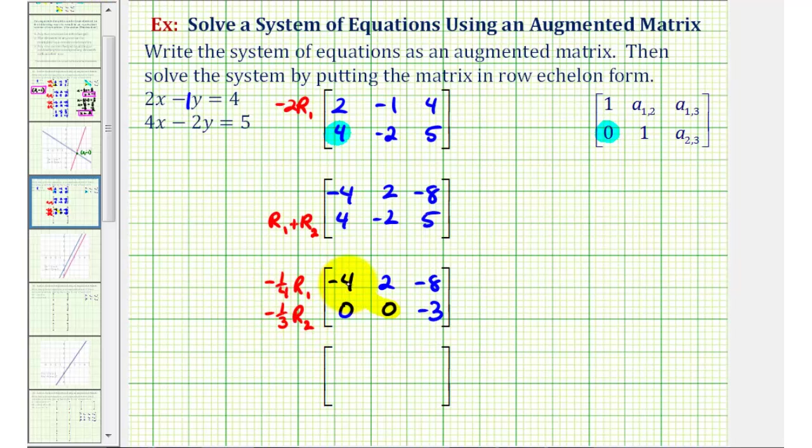So we have negative one-fourth times negative four, that's positive one. Negative one-fourth times two, that's negative two-fourths, or negative one-half. And negative one-fourth times negative eight is positive two. For row two, we would have zero, zero, and then negative one-third times negative three is positive one.